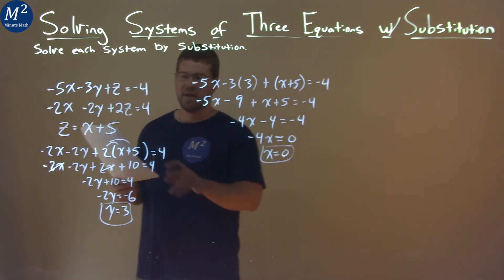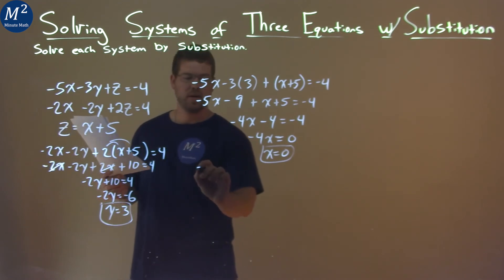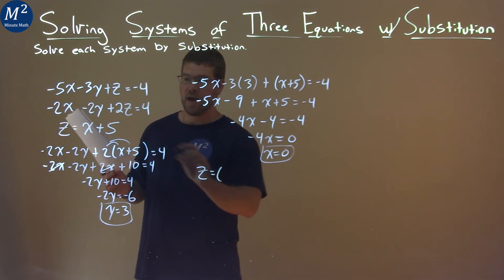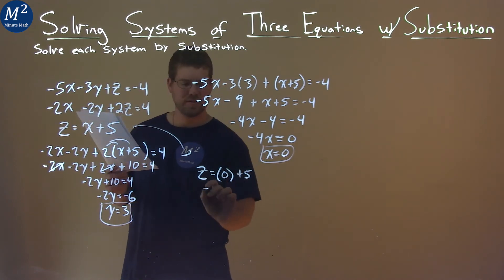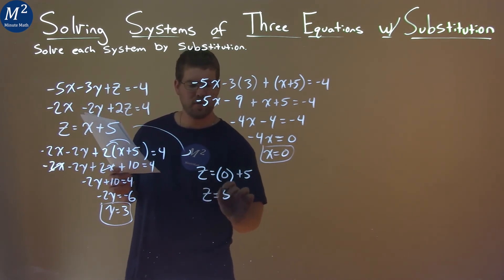We need to get a z. That's actually super easy. Z is right here. Z equals, well, instead of x, let's put a 0 in, plus 5. So, pretty much there, z equals a positive 5.